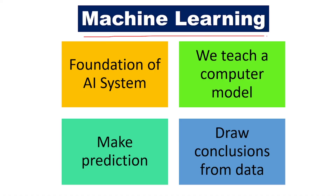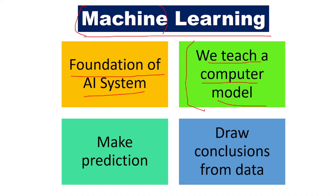What is Machine Learning? Machine learning is a foundation of the AI system. Here, the machine has to learn human behaviors. In machine learning, we teach a computer model — software developers are teaching the computer model to make predictions. Prediction means guessing. We are teaching the computer model to make predictions and draw conclusions from data.